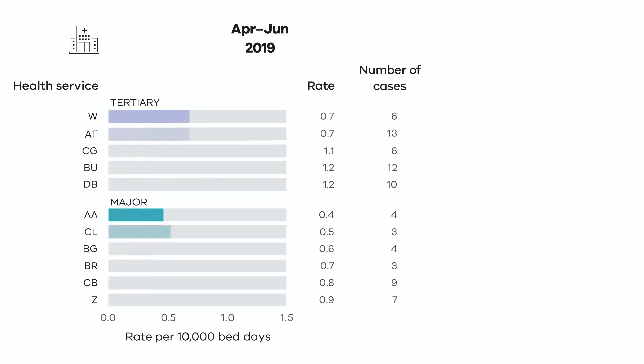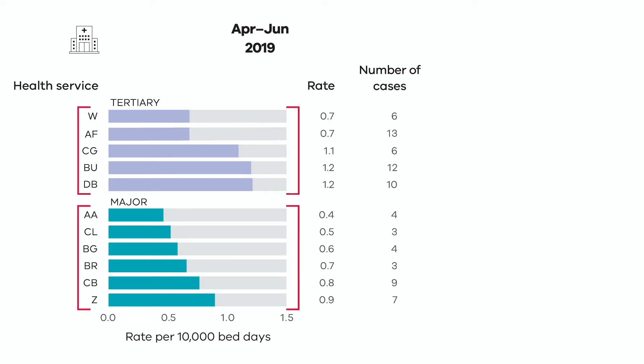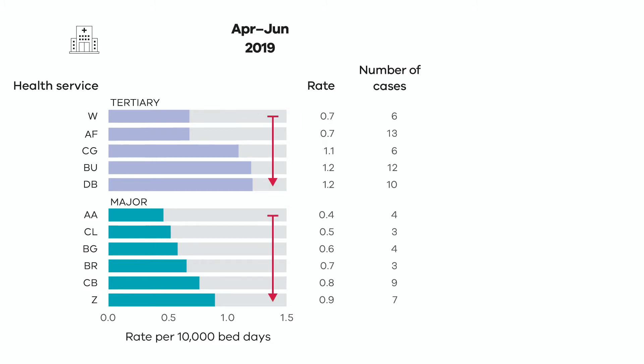Bar charts are one of the simplest and most common ways to visually present data. Most measures across Varhe's reports are presented in a bar chart. Bar charts are usually displayed with health services grouped with its relevant peer group. This enables the health service to compare their own performance against those with health services of a similar type, size or profile. Bar charts are always ordered from most favourable results at the top and least favourable at the bottom.